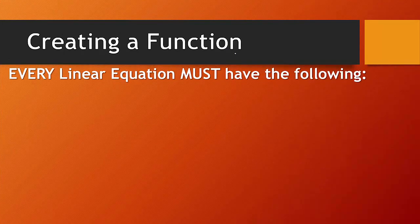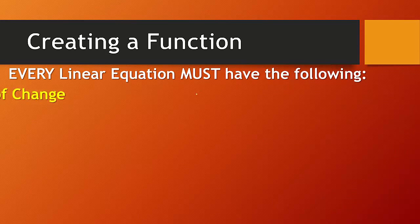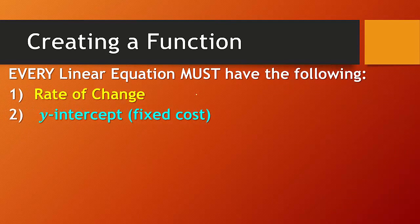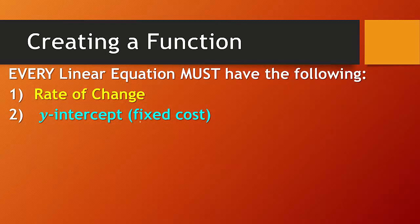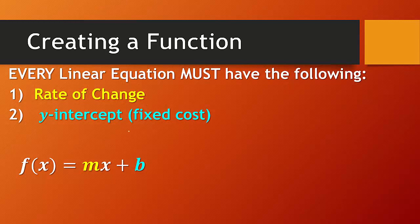So let's start with creating a function. Every linear equation must have the following: rate of change, y-intercept, which in some cases when you get into word problems might be your fixed cost, but we'll get into that later. And that's going to be in the form of this. So your rate of change is also known as your slope, which is this, and your y-intercept is that. And when you have a graph, it's exactly what it sounds like. It's where the graph crosses the y-axis.